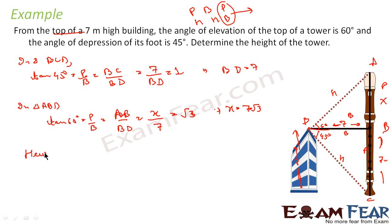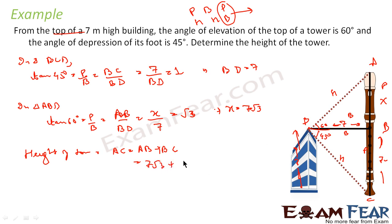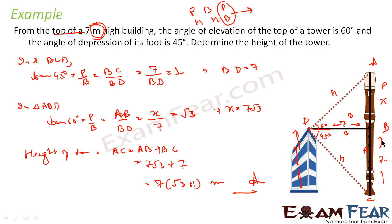The total height of the tower is AC = AB + BC = 7√3 + 7 = 7(√3 + 1) meters. So the height of the tower is 7(√3 + 1) meters. The approach used two triangles sharing a common side to solve the problem.